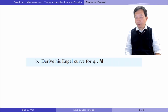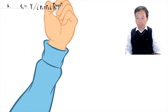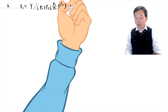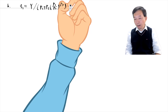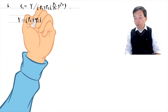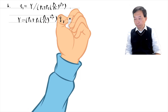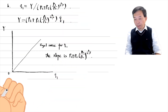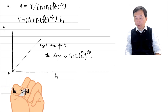In part B, derive his Engel curve for Q1. The Engel curve shows the relationship between the quantity demanded for the goods and income, holding prices constant. Income is on the vertical axis and the quantity of Q1 demanded is on the horizontal axis. We have already got the demand function for Q1. Rearranging the demand function gives the function for the Engel curve. The slope of the Engel curve is a function of P1, P2, and rho, which is a constant if they are given. So the Engel curve is an upward sloping straight line.